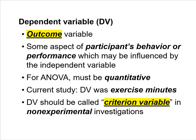In this investigation, the dependent variable is the outcome variable — some aspect of participant behavior or performance that may be influenced by the independent variable. For ANOVA, the outcome variable must be quantitative. In this investigation, the dependent variable was exercise minutes. It's okay to call it a dependent variable here because we're conducting a true experiment. However, it should instead be called a criterion variable if your investigation uses a non-experimental research design.